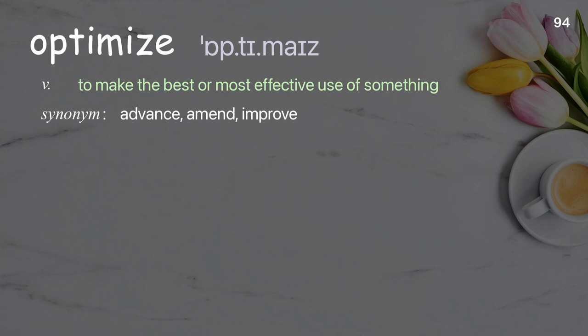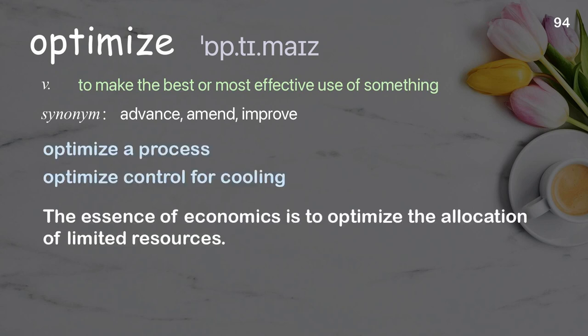Optimize: to make the best or most effective use of something. Examples: optimize control for cooling; the essence of economics is to optimize the allocation of limited resources.